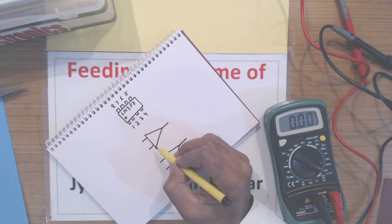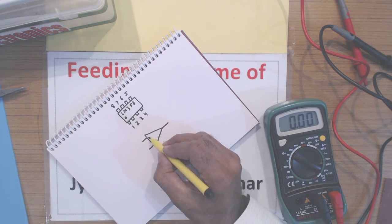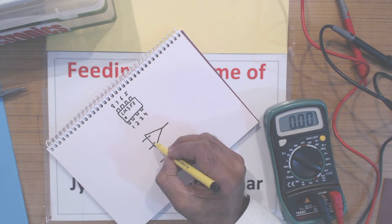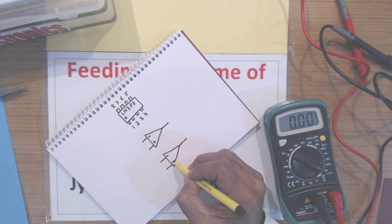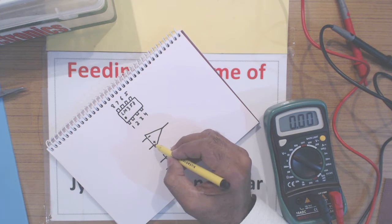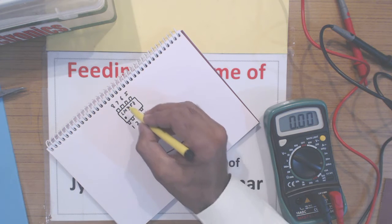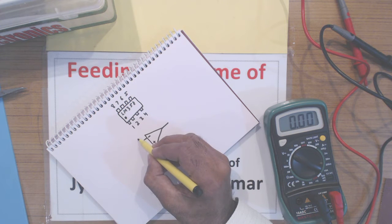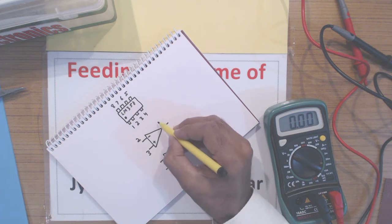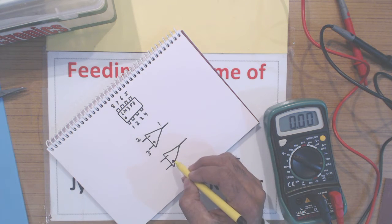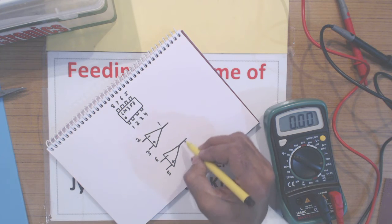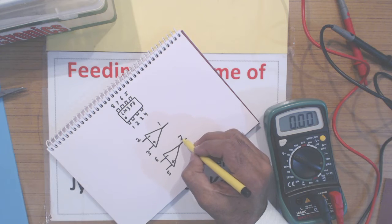Operational amplifier has 2 inputs - one is marked with a minus sign called inverting input, and the other is marked with a plus sign which is the non-inverting input. For this LM358 package, pin number 2 and 3 are the inputs, and pin number 1 is the output. For the second op-amp, pin 6 is inverting, 5 is non-inverting input, and 7 is the output.